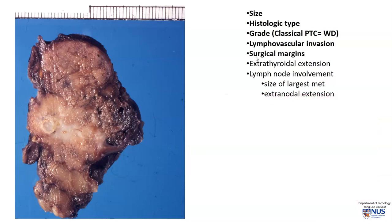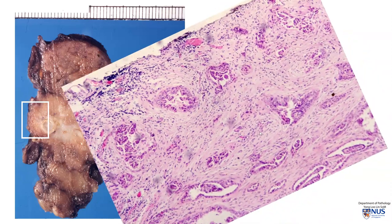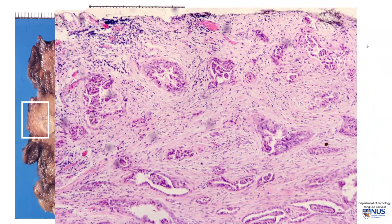The next thing we want to assess is surgical margins. I'm most concerned about this area because I can see the tumor is really close to the margin here. So I'll take a sample from there, and we can see that the tumor just touches on the surgical margin, and therefore the margin is involved focally.